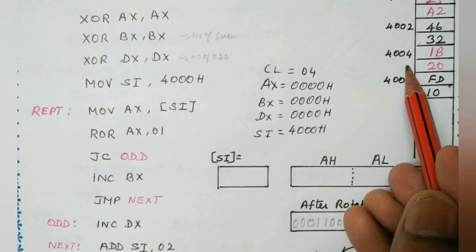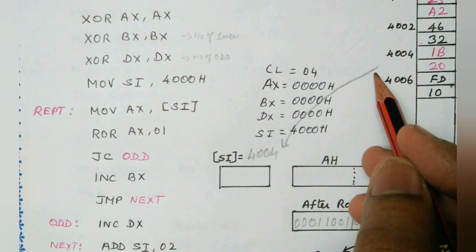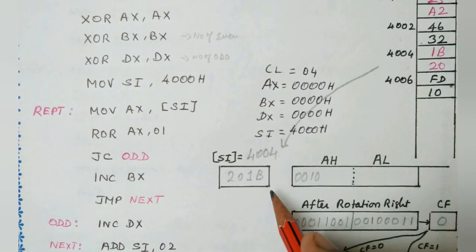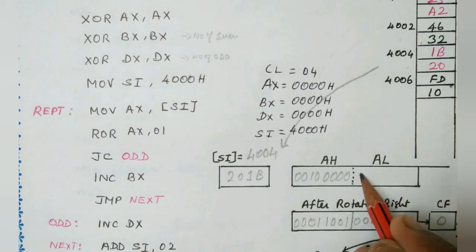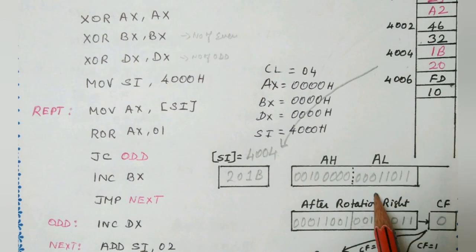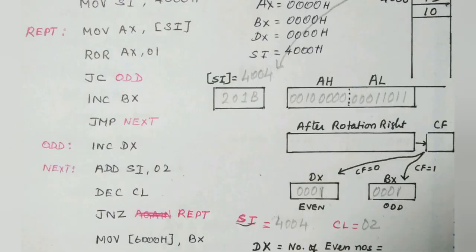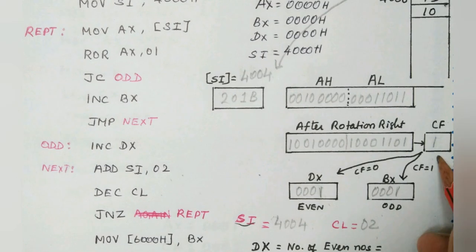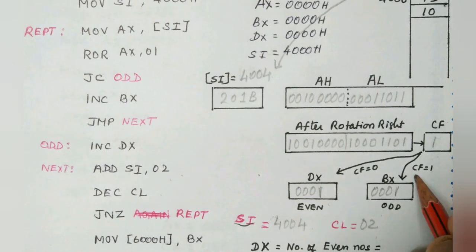The SI points to the location 4004. The value present is 20IB. The 20IB is now moved to the AX register. Here we represent in binary form so that we can easily understand. The last LSB will be 1. So it ends with 1. Moving to the right side, the carry flag now becomes 1. So again we have CF equals 1. So whenever we find CF equals 1, BX is incremented by 1.